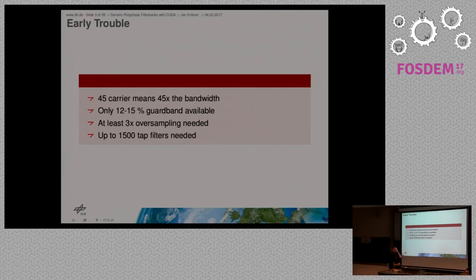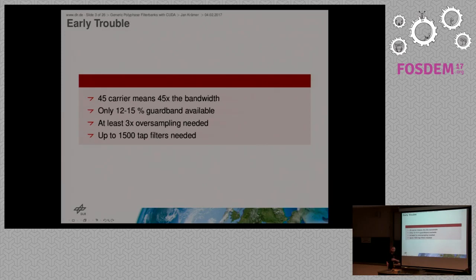That could be a lot. Also, for the actual channels the restrictions were quite tight — we only had 12 to 15 percent guard band between the information signal and the next channel. So this is quite steep; we needed oversampling. At least three times oversampling is needed where we are right now; at that time we had to do at least eight times oversampling. When we did the filter design we came up with up to 1500-tap filters — if anybody knows FIR filters, that's a huge filter.